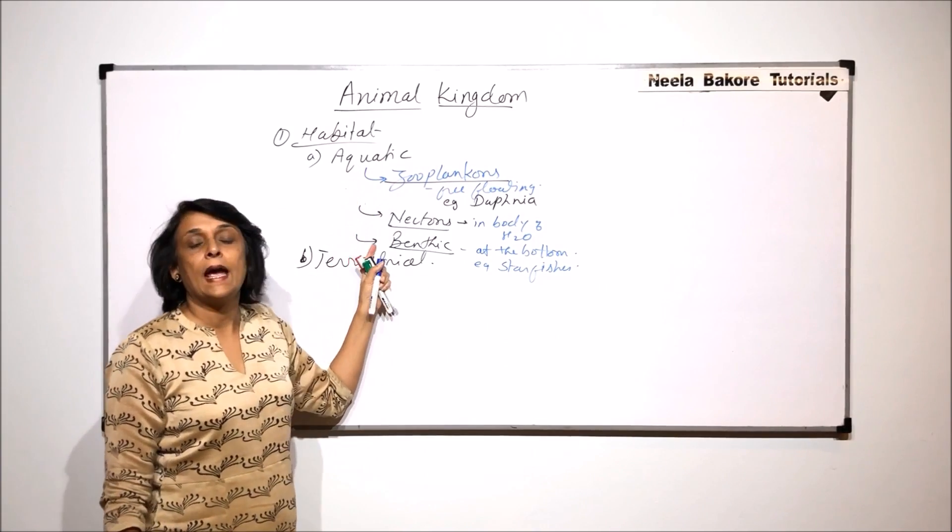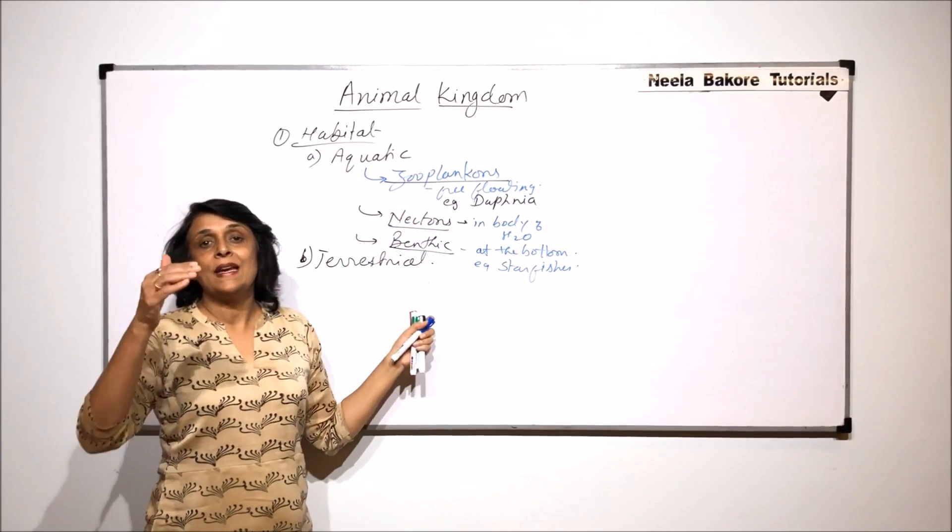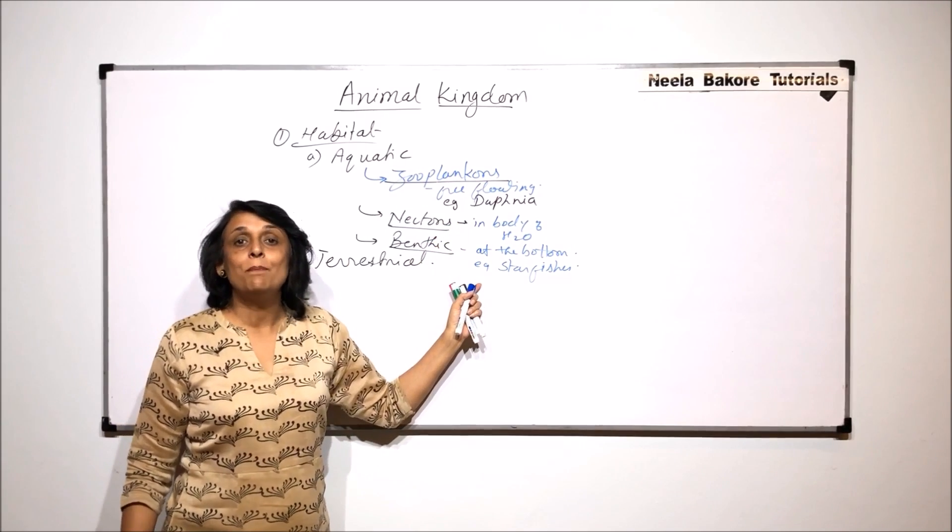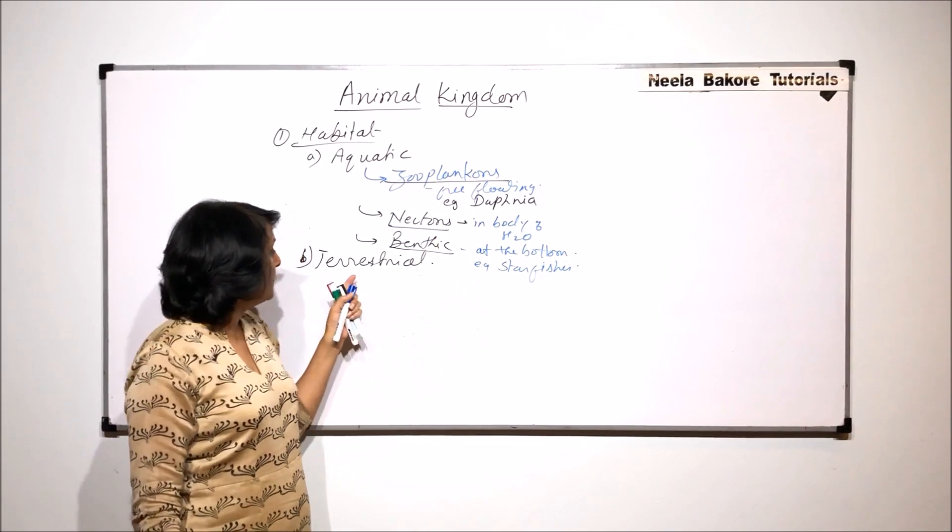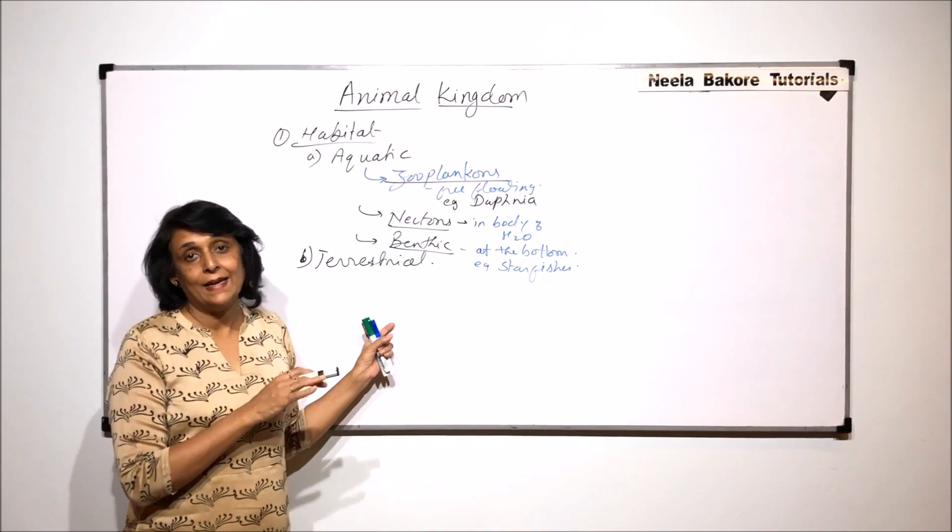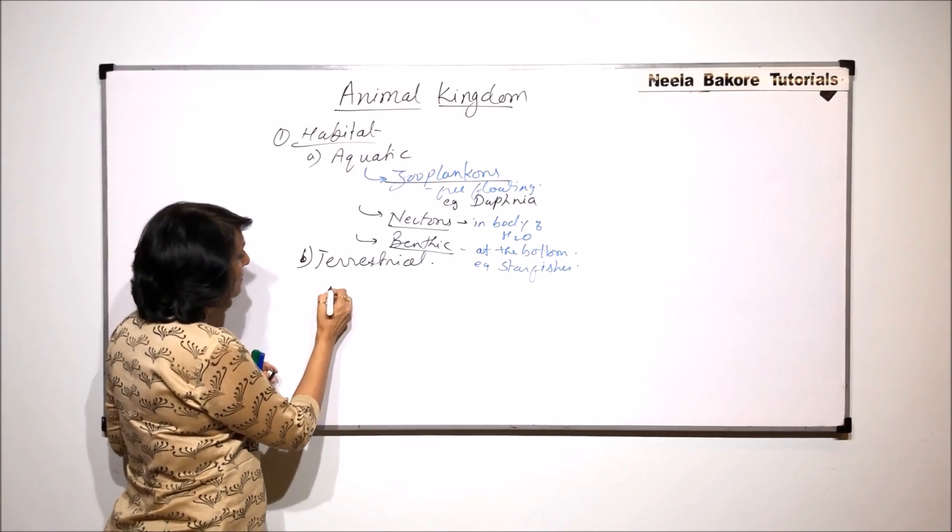So when we say aquatic, that means they are found in water. But in water also, we can have levels on the surface, in the body part or at the bed of that water body. Now when we come to terrestrial, that means they are on land. Now where exactly on land? So here also we can have subtypes.